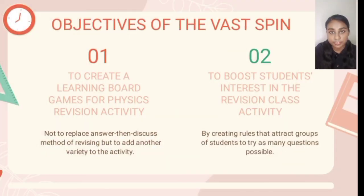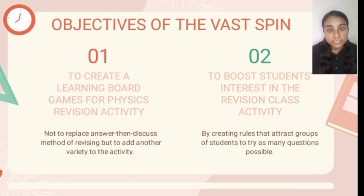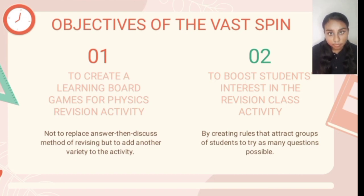VASPIN was created with two main objectives. The first is to create a learning board game for physics revision class activities. Based on the survey conducted, we intend not to replace the answer-then-discuss method of revising, but instead to add another variety of revision for physics. VASPIN's second objective is to boost students' interest in their physics revision class by attracting groups of students to draw as many questions as possible to win the game, while effectively learning through group discussion.